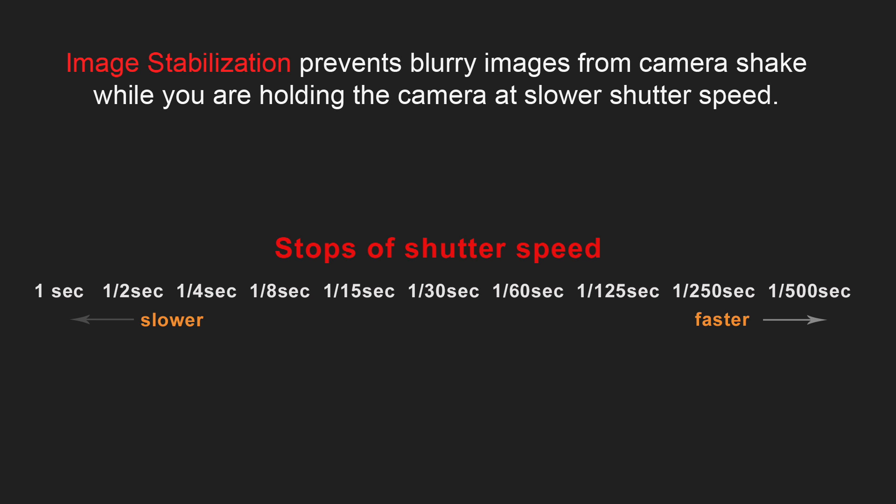Now let's talk about image stabilization. It prevents blurry images from camera shake while you are holding the camera at slower shutter speeds. It all depends on the camera and the lens, but in some cases with image stabilization you will be able to use 3 to 4 stops slower shutter speed than you would normally use and still get sharp images. For example, if without image stabilization you are able to hold the camera at 1/125th of a second without camera shake, with image stabilization you could hold the camera at 1/8th of a second and still get a sharp image.